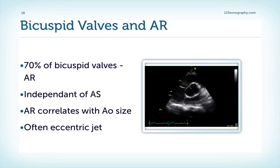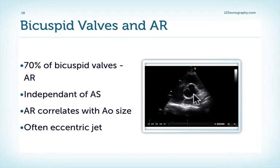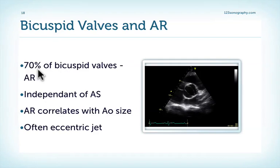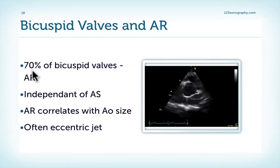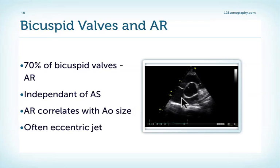Let's turn to bicuspid valves and aortic regurgitation. Here again, a patient who has only two cusps — a classic bicuspid aortic valve. We know that approximately 70% of patients with bicuspid valves also have aortic regurgitation, and the presence of aortic regurgitation is independent of the presence of aortic stenosis.